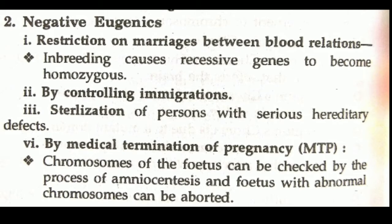When the recessive gene is in homozygous condition, the probability of disease is very high. The next measure is by controlling immigration, because immigration affects gene flow in the population.